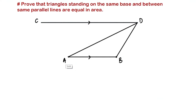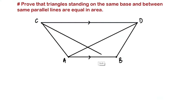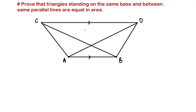Now we are going to make another triangle on the same base AB, and between the same parallel lines AB and CD. So now we have two triangles — triangle ABC and triangle ABD — which are standing on the same base AB and are between the same parallel lines AB and CD. Our theorem tells us the area of these two triangles must be equal.